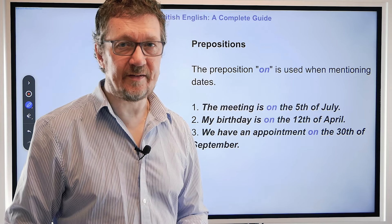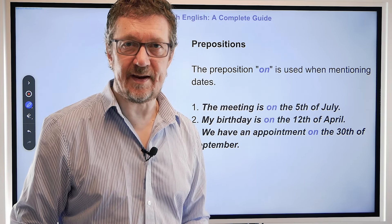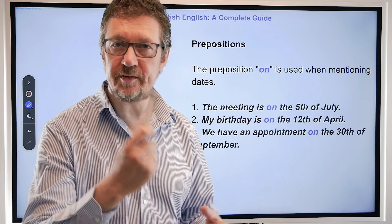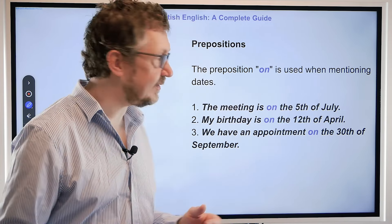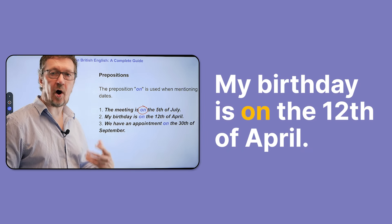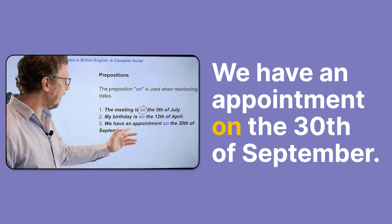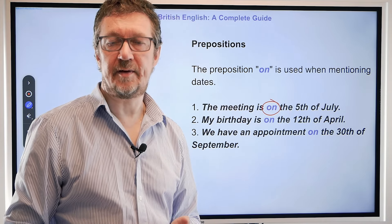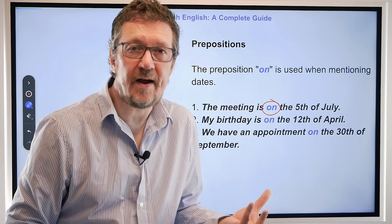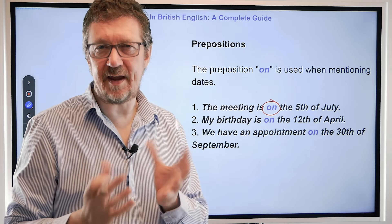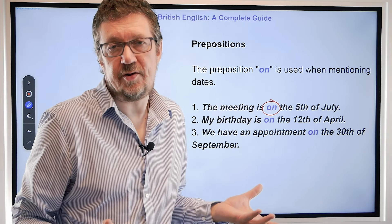Lots of people worry about prepositions when they're speaking or talking about dates in English, whether it be British or American. And it's very easy — you've got one to remember: it's 'on'. So when I talk about a date, I say 'the meeting is on the 5th of July', 'my birthday is on the 12th of April', 'we have an appointment on the 30th'. It's always 'on' a date — the same as if you say 'on Friday' or 'on Monday'. You are specifying a particular day, so you use 'on' for both.